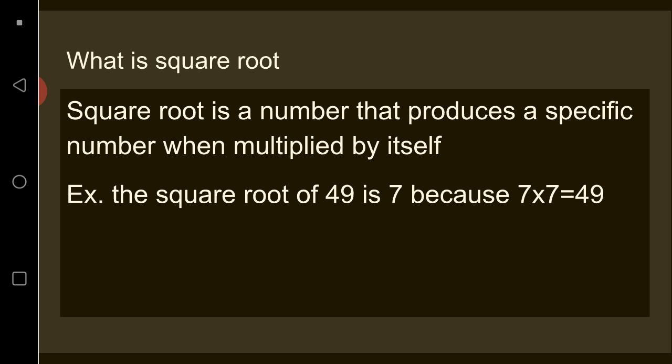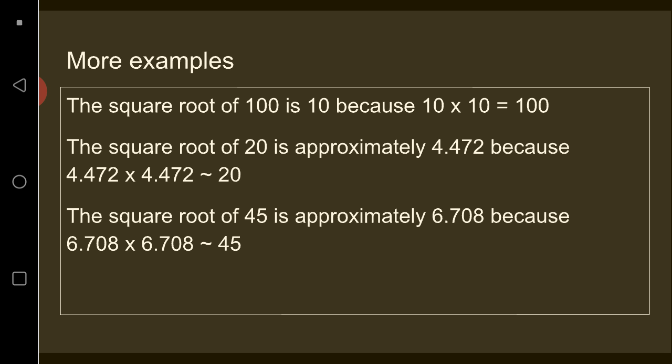First, what is square root? Square root is a number that produces a specific number when multiplied by itself. A good example of this is the square root of 49 is 7 because 7 times 7 equals 49.